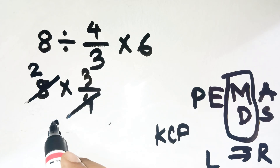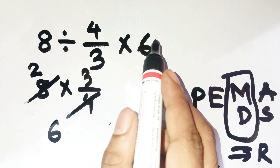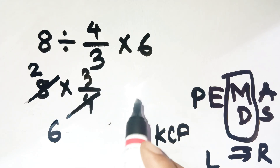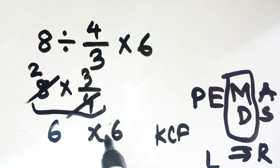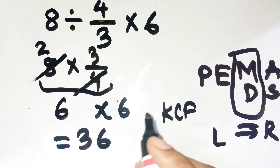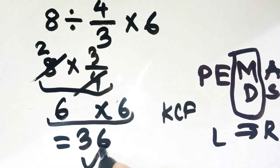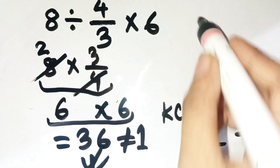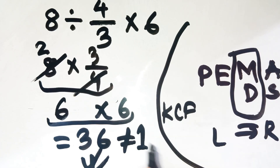The first part simplifies to 6. Don't forget, we still have that times 6 waiting at the end. So 6 times 6 is 36 — not 1, not even close. With full emphasis, the correct answer is 36, not 1. If you can prove me wrong, go ahead — the comment section's all yours.